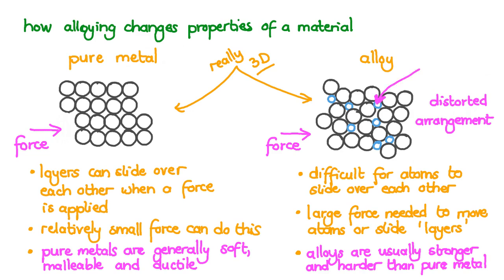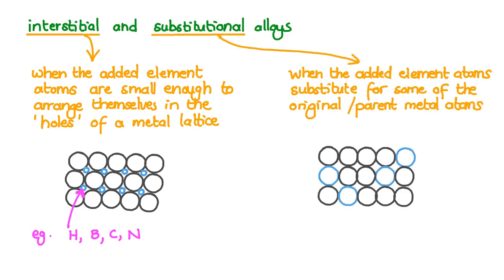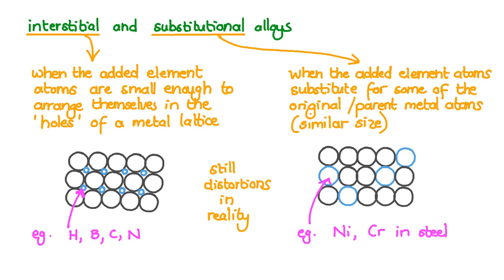Let's have a look at the two ways in which the added element atoms can arrange themselves in the original metal. An interstitial alloy is when the added element atoms are small enough to arrange themselves in the holes of a metal lattice. Small atoms that can do this include hydrogen, boron, carbon and nitrogen. A substitutional alloy is when the added element atoms substitute for some of the original or parent metal atoms. This can happen when they have a similar size. Examples of atoms that can do this are nickel and chromium atoms in amongst the iron atoms in steel. Some alloys are mixtures of interstitial and substitutional arrangements. And remember there are still distortions in the arrangement in reality, although this has not been shown here.